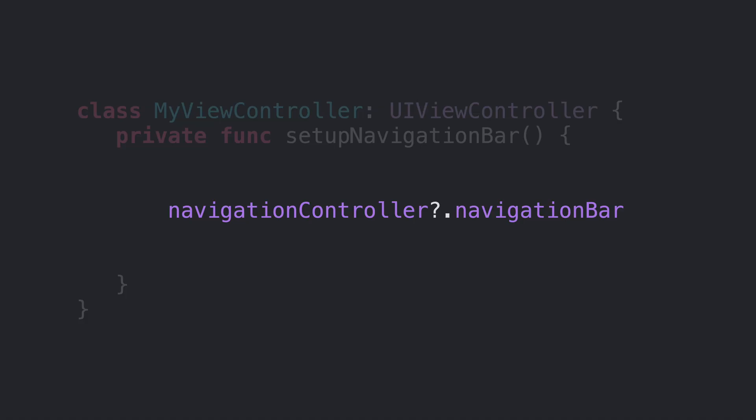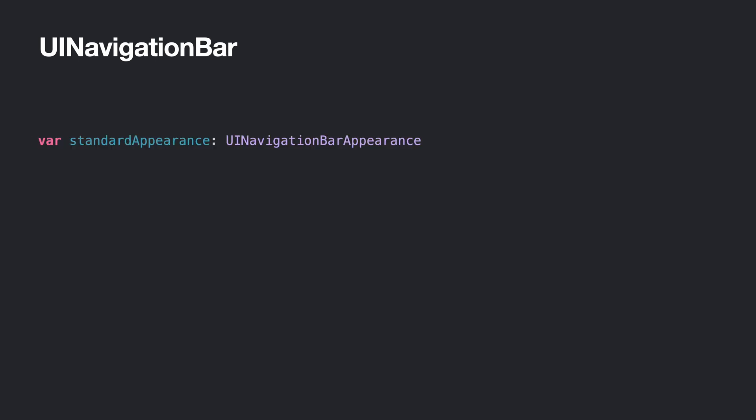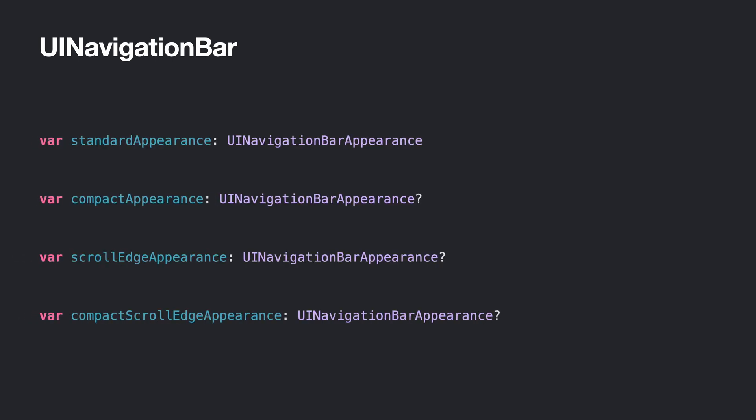But how do we access this appearance object? We have two options. Setting the appearance globally: the first way to style the navigation bar is globally. We can access the navigation bar from a view controller's navigationController?.navigationBar property. With this navigation bar, to access the appearance we use the four main properties: standardAppearance, compactAppearance, scrollEdgeAppearance, and compactScrollEdgeAppearance. These properties have the type UINavigationBarAppearance optional, except that the standard appearance is the only one that is not optional.